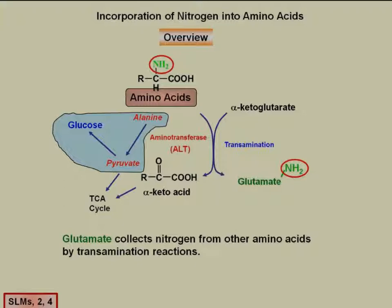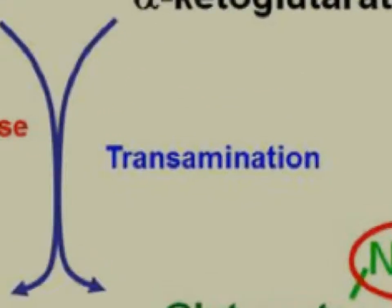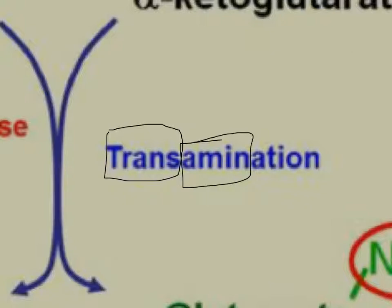The typical steps to remove nitrogen from an amino acid allow it to be used for glucose production or for energy in the TCA cycle. An aminotransferase takes the amino group off the amino acid and transfers it to alpha-ketoglutarate, an alpha-keto acid, producing a different alpha-keto acid. When the amine group is transferred to alpha-ketoglutarate, it forms glutamate. This shuffling of an amine group is called transamination — transferring an amine.